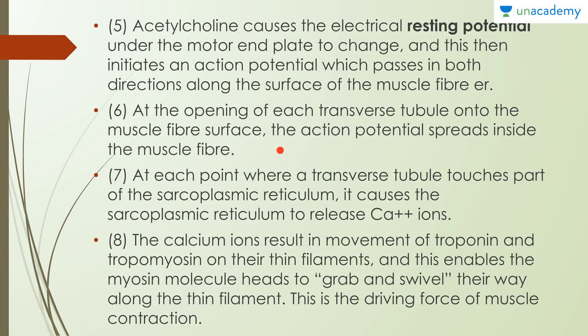Inside the sarcolemma we have transverse tubules. These transverse tubules open up and the action potential spreads inside. At each point where a transverse tubule touches the sarcoplasmic reticulum — which is the endoplasmic reticulum of the sarcomere — it causes the sarcoplasmic reticulum to release calcium (Ca²⁺) ions. Wherever the action potential reaches the part of the transverse tubule in contact with the sarcoplasmic reticulum, a number of calcium ions are released. These calcium ions result in movement of troponin and tropomyosin on the thin filament.